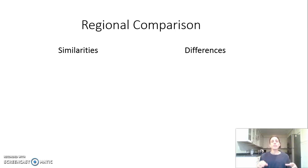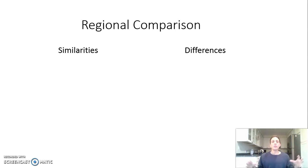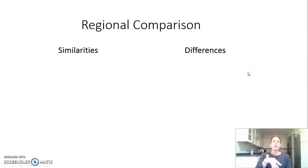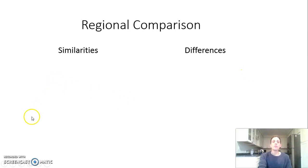Turner made this argument looking back because by the 1890s the frontier had, in his view, closed, and America would have to look in new directions. For your assignment, try to come up with similarities and differences between the regions, as well as continuity and change over the time period, and think about connections between the North, South, and West. We'll pick up with time period five in the next lesson.